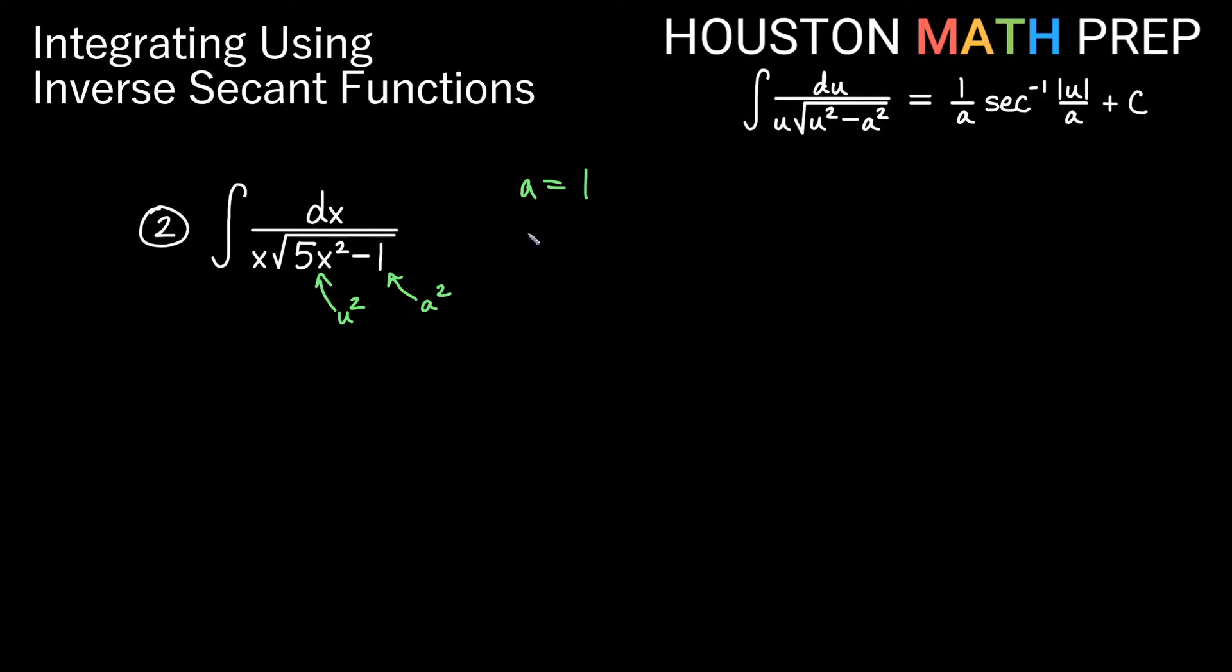Let's go ahead and write down that information. If 1 is a squared, then a is just 1. And now we need to figure out what u is. What times itself gives us 5x squared? Well we know x times x gives us the x squared part. What times itself gives us the 5? Well it would just be square root 5. So this x is not inside the square root, but we have square root 5 times x, and that's our u. So now we need to figure out du.